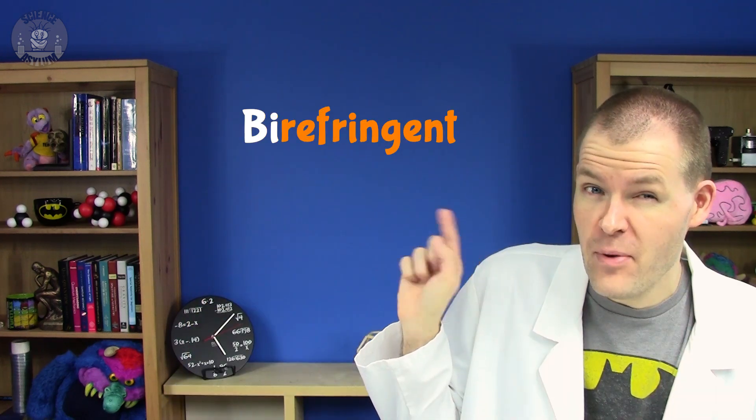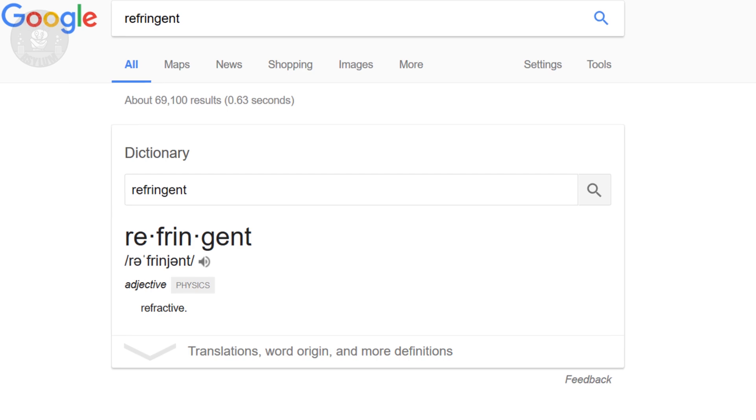How do you make it do that though? Very carefully. What we need is a piece of birefringent crystal. That's birefringent. Refringent just means refractive. In other words, a beam of light will bend as it passes through.